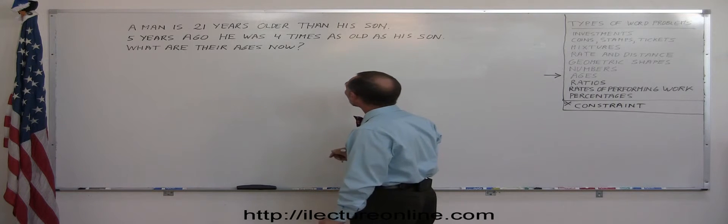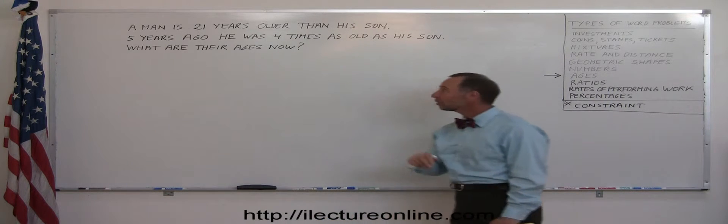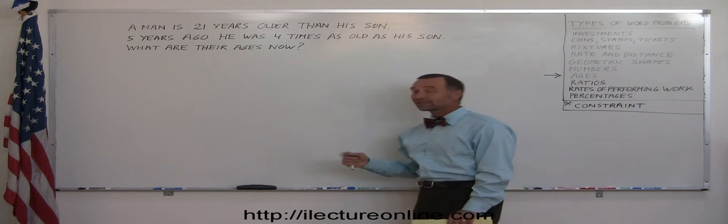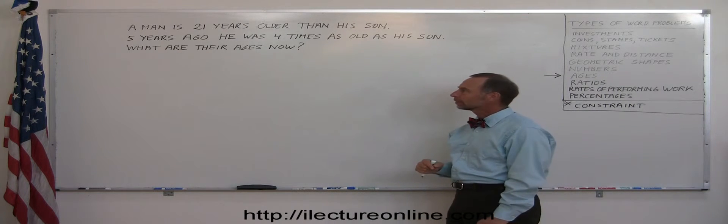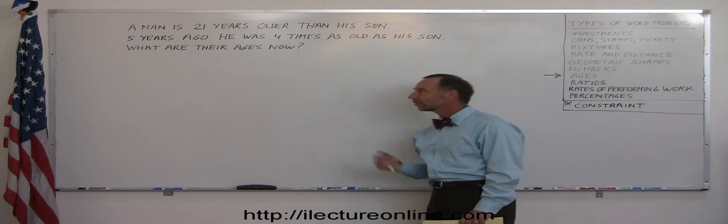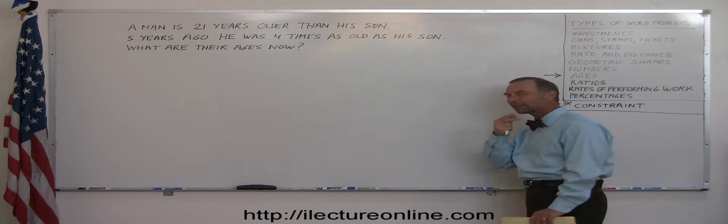Like in this case, we have a man who is 20 years older than his son, I'm assuming that's today. And then it says that five years ago, he was four times as old as his son. What are the ages now? It's a very typical problem. So how do you approach one of those?